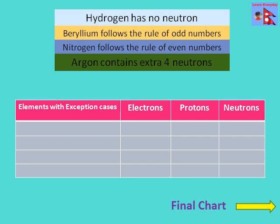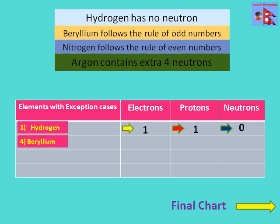Now here we come to the exceptional cases. Four elements among the 20 do not follow the rules mentioned above. In hydrogen: 1 electron, 1 proton, but no neutron. In beryllium: 4 electrons, 4 protons, and 5 neutrons — it follows the rule of odd numbers, itself being even.